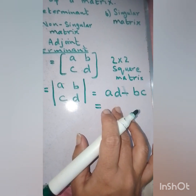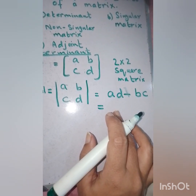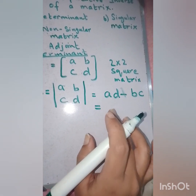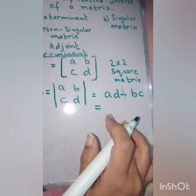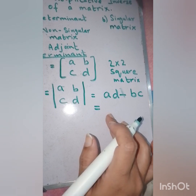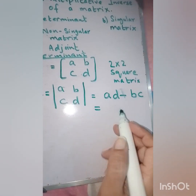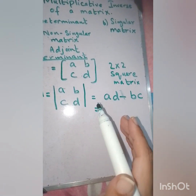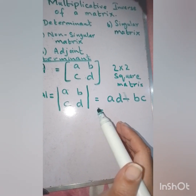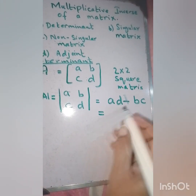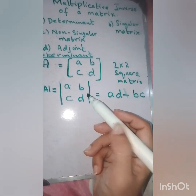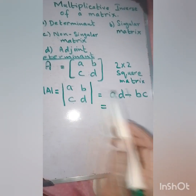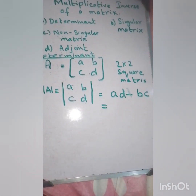If the answer is any non-zero real number, it is a non-singular matrix. If the answer equals zero, it is known as a singular matrix. To proceed with finding the multiplicative inverse, we need a non-singular matrix — that is, the determinant must not equal zero. For a matrix A, B, C, D, we compute AD minus BC.